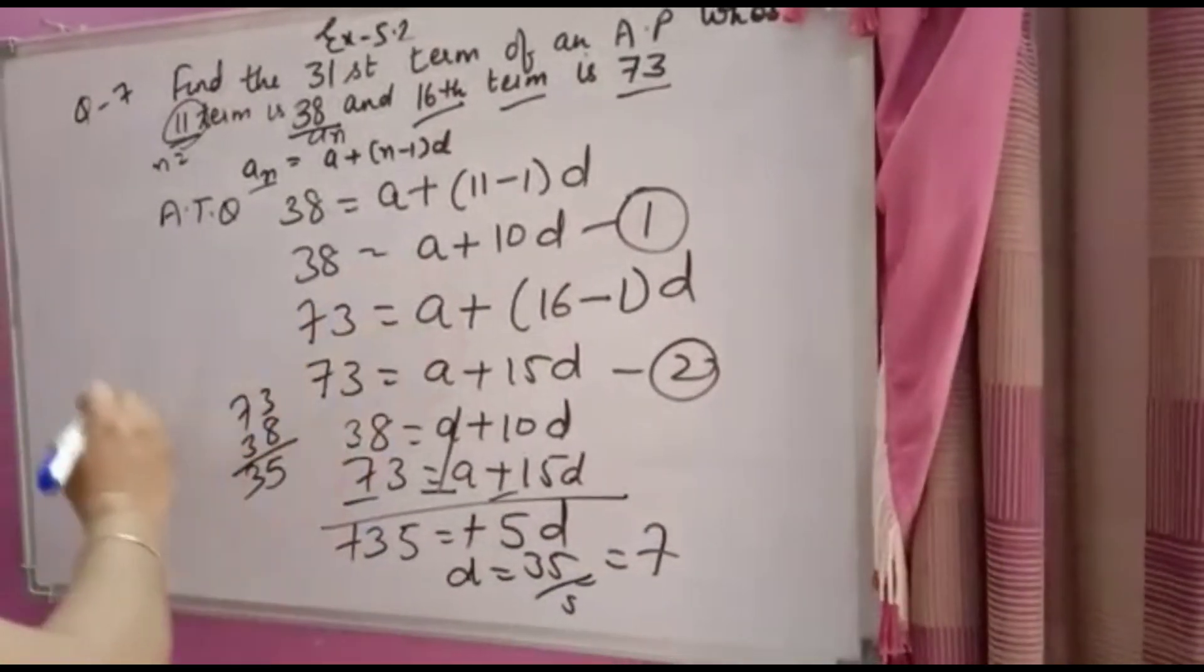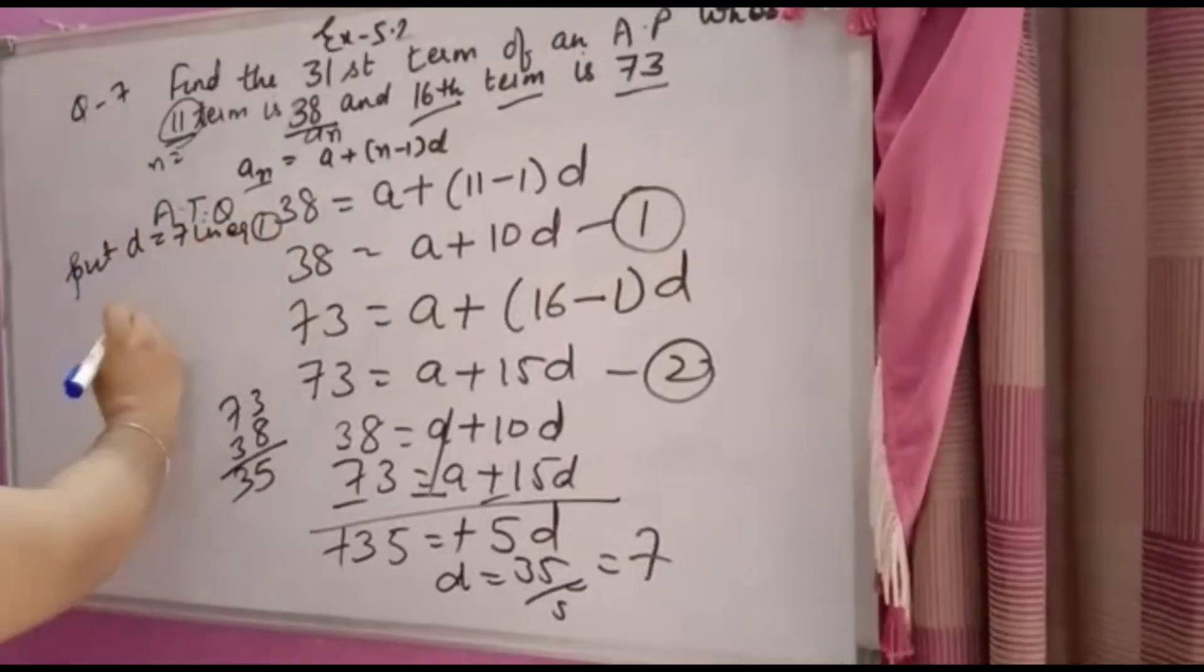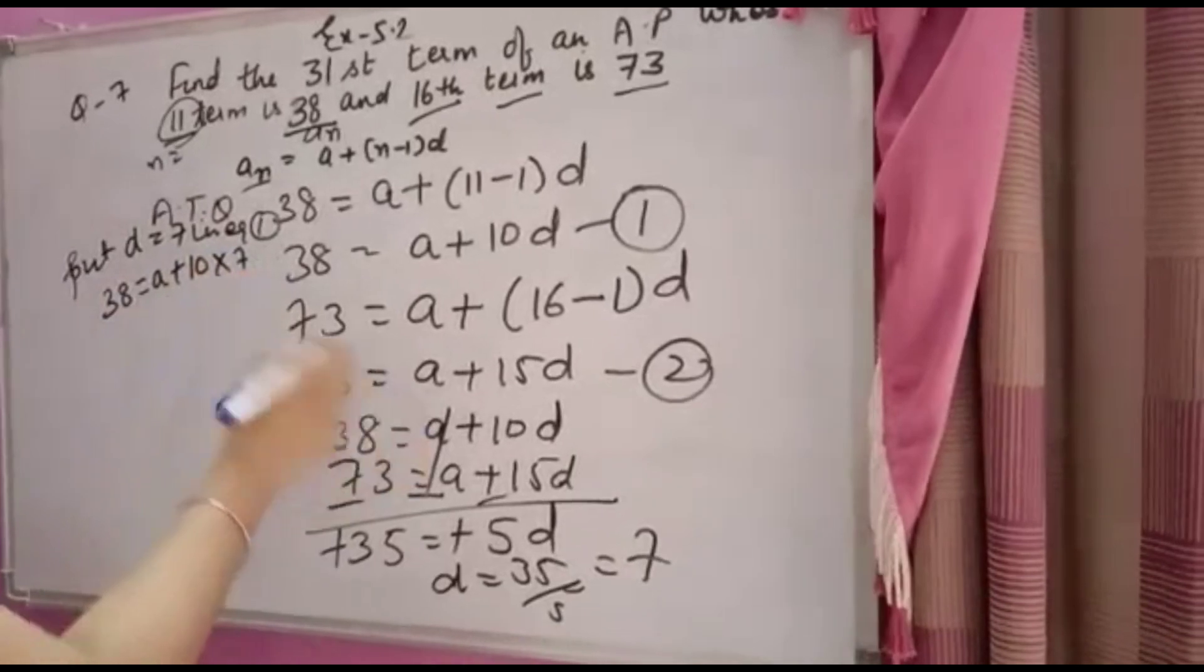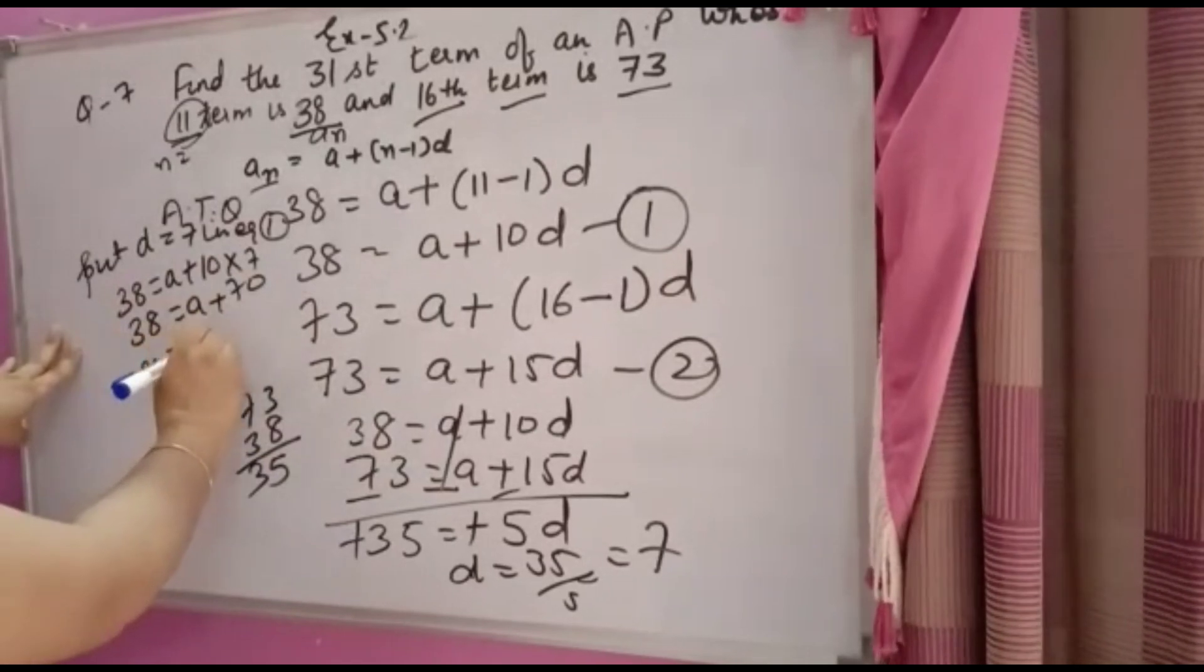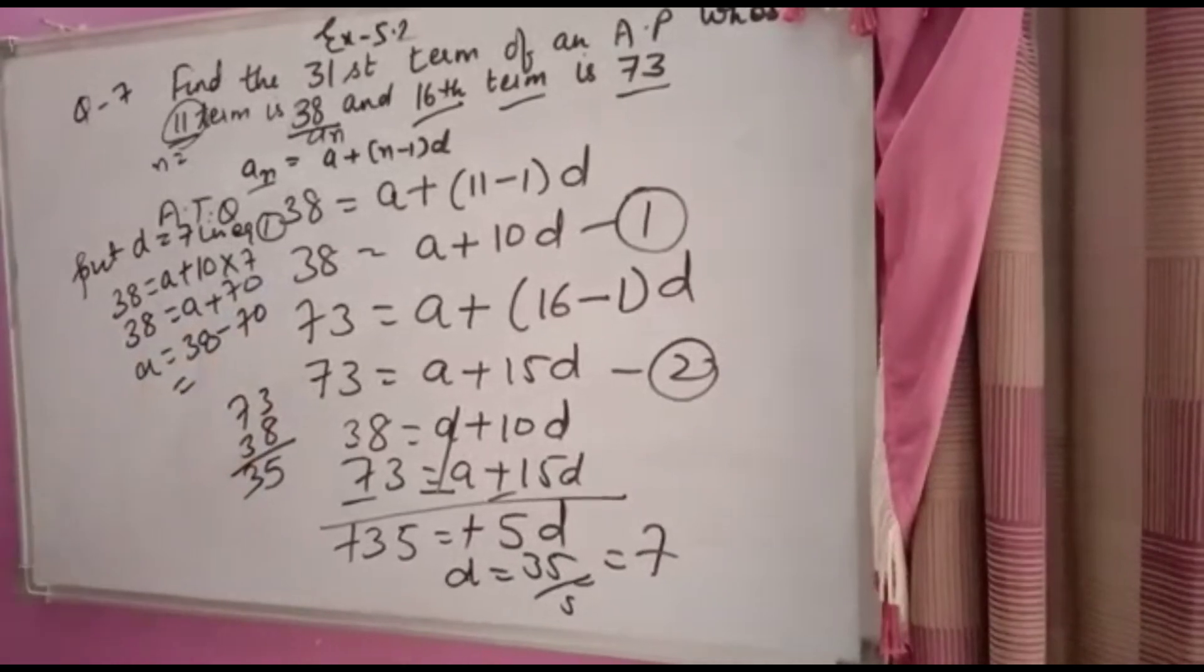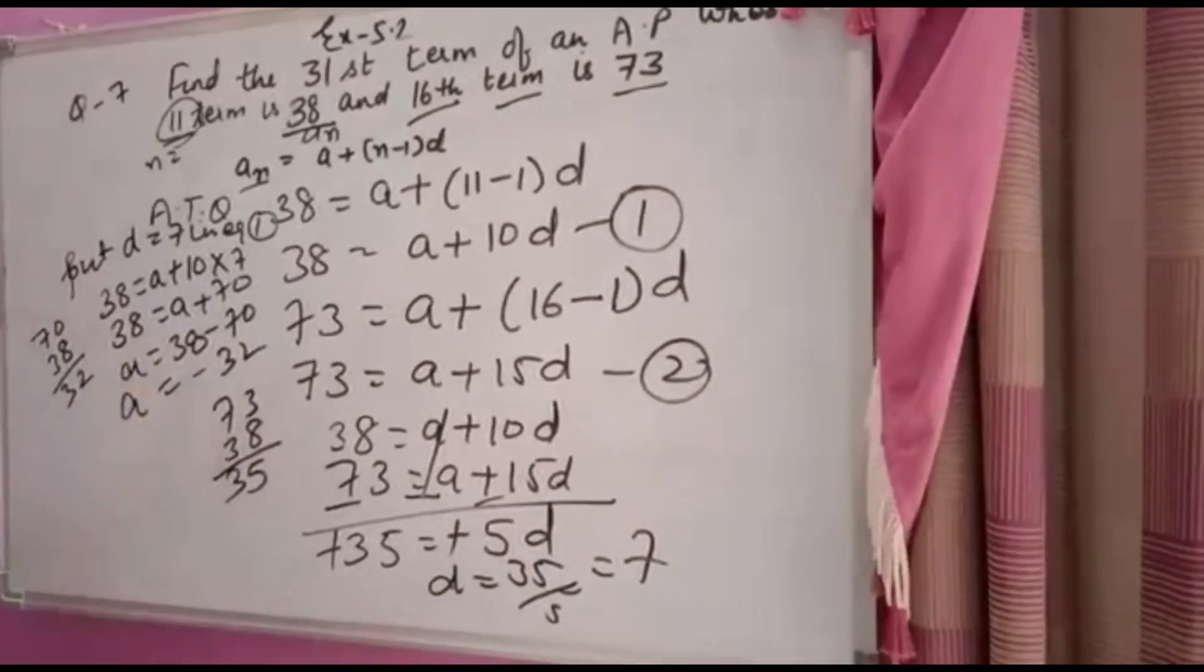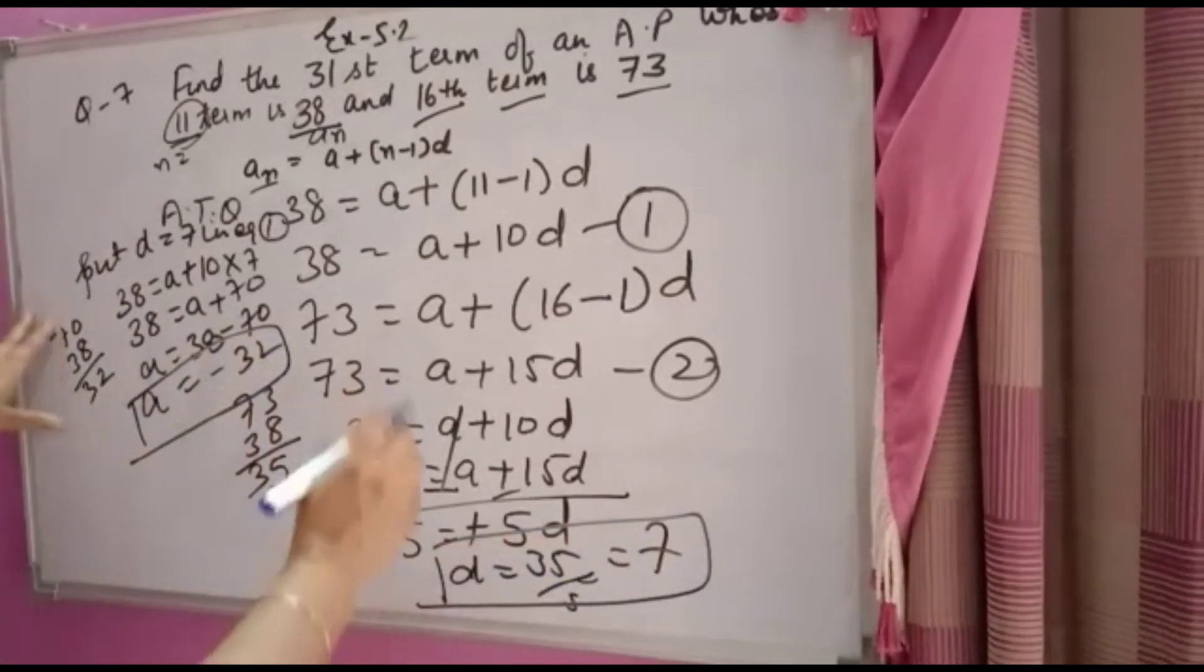Now you want the A value, so put D = 7 in equation 1. You will get 38 = A + 10×7. 38 = A + 70, so A = 38 - 70 = -32. Therefore, A = -32 and D = 7.